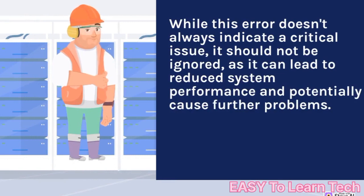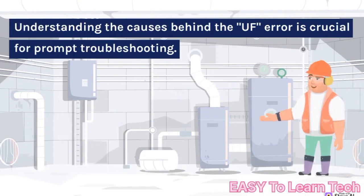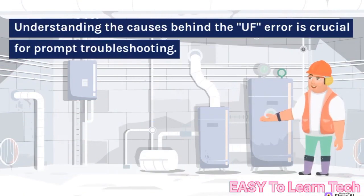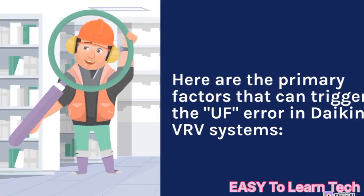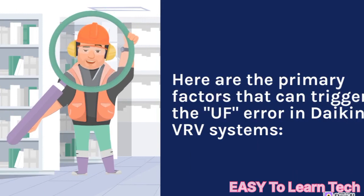While this error doesn't always indicate a critical issue, it should not be ignored, as it can lead to reduced system performance and potentially cause further problems. Understanding the causes behind the UF error is crucial for prompt troubleshooting. Here are the primary factors that can trigger the UF error in Daikin VRV systems.